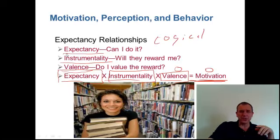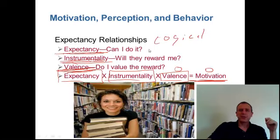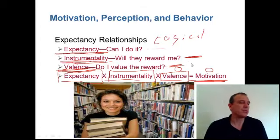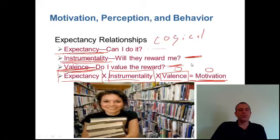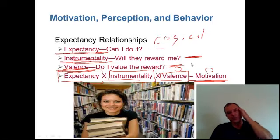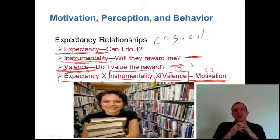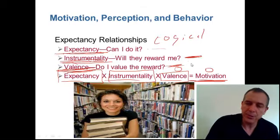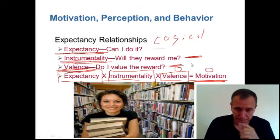You can apply expectancy theory to school. You're going to school; you believe you can do it, you believe they will give you the degree, and you value the degree. You've probably seen people who didn't have one of these — 'I don't think I can do it, I'm dropping out,' or 'I don't think they're really giving me this degree, I'm not doing it,' or 'This degree isn't very valuable, I'm not going to do it.' So that's motivation, part two. We've talked about behavior modification, equity theory, the job characteristics model, flexibility at work, other reward programs, and expectancy theory. See you for other management videos on my YouTube channel.